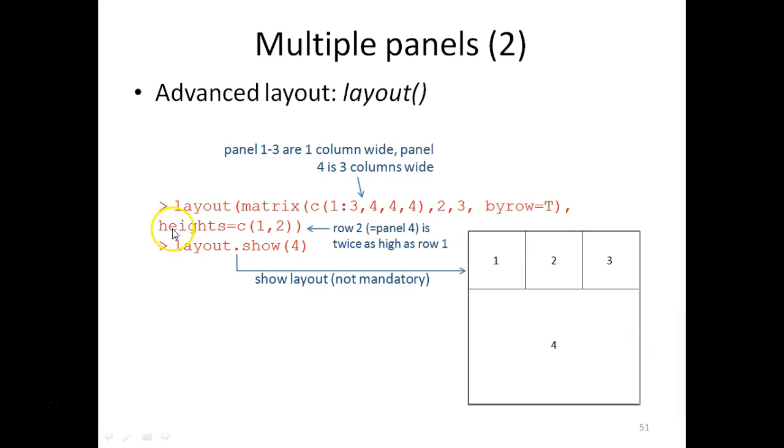Then we add information that heights are one and two, meaning that the first row should be of height one and the second row will be of height two, that is twice as high as the first row.